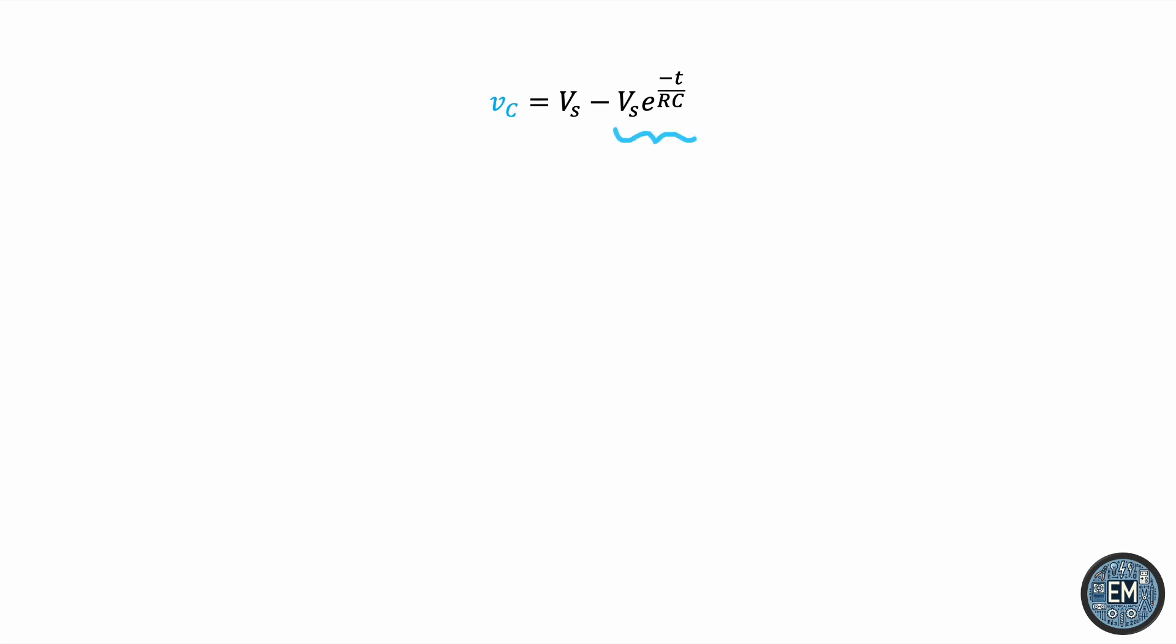This term over here is what we call the transient part of the solution because the exponential term will decay, leaving behind this constant term which we call the steady-state part of the solution. Mathematically, this means that the limit as t approaches infinity of the capacitor voltage is VS, the DC voltage source.